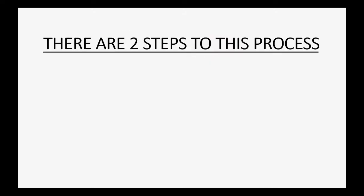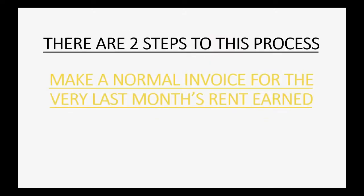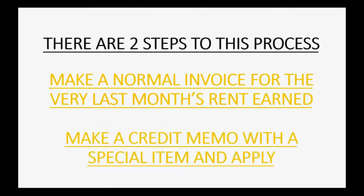There are two steps in this process. First, you make a normal invoice for the very last month's rent, because you did earn the last month's rent if the tenant did stay there. Then you will make a credit memo with a special item on it and apply that credit memo to the invoice for the last month's rent.